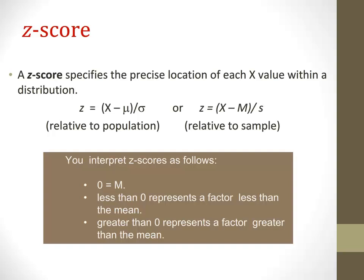A z-score gives us the number of standard deviations that a score lies either above or below the mean. The sign — positive or negative — indicates whether the score is above or below the mean. If a z-score equals zero, it equals the mean. If less than zero, it's below the mean. If greater than zero, it's above the mean. For example, a z-score of 1 means the value is one standard deviation above the mean, and a z-score of 2 means two standard deviations above the mean.